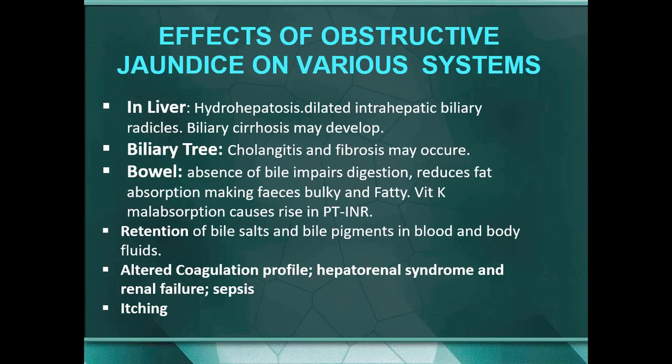If bile is not reaching the intestine, there are certain effects on different systems. The liver becomes swollen — that is hepatocosis — with dilated intra-hepatic biliary radicals. Biliary cirrhosis may develop, and the biliary tree develops cholangitis and fibrosis. Because of the absence of bile, there is impairment of digestion, reduced fat absorption making feces bulky and fatty — known as steatorrhea — and vitamin K malabsorption resulting in coagulation problems.